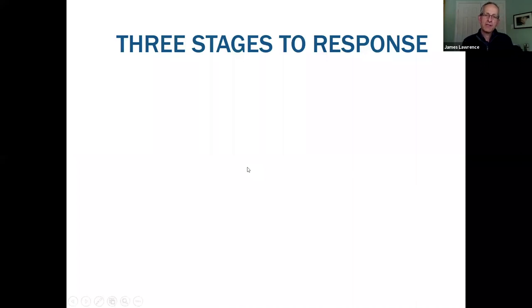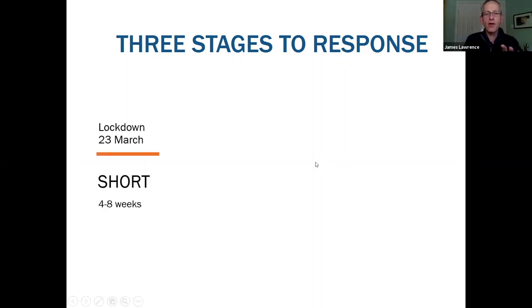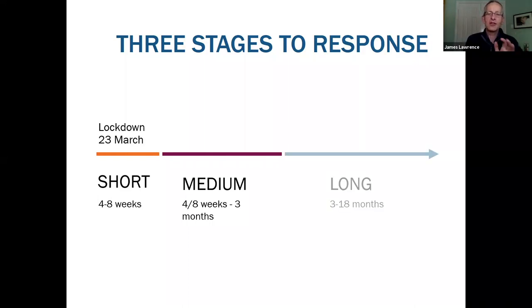When we first heard about lockdown at CPS, we quickly identified three stages to our response: short, medium, and long term. Short term was about four to eight weeks. Medium term would be somewhere between eight weeks to three months, and then longer term three months onwards. We're around this transition moment between short-term immediate response and medium-term response to the crisis.